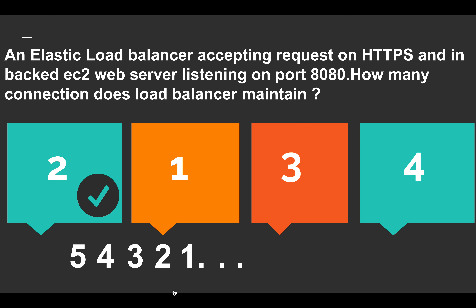The answer is 2 — two connections are maintained by the load balancer. One connection comes from the outside internet, and one connection is open to the internal server. The load balancer handles the incoming request and also sends that same request to the actual backend server. So the load balancer maintains two separate connections: one with the client and one with the EC2 instance.